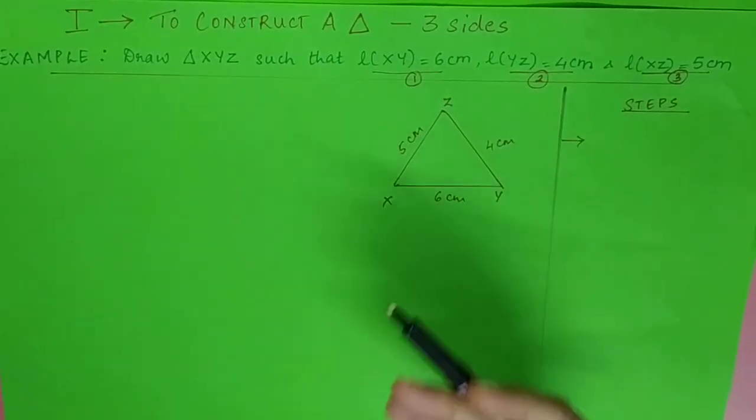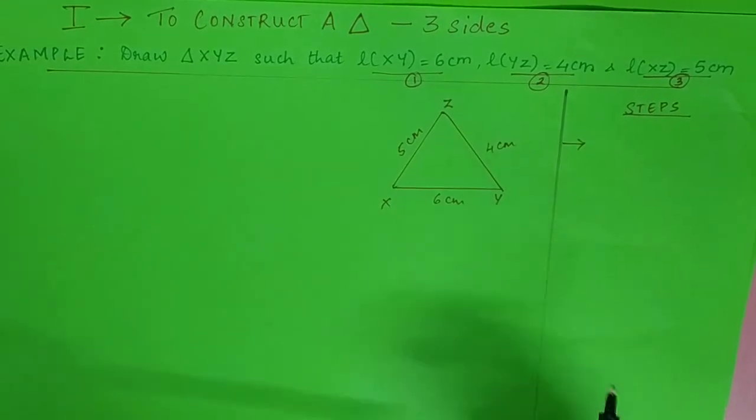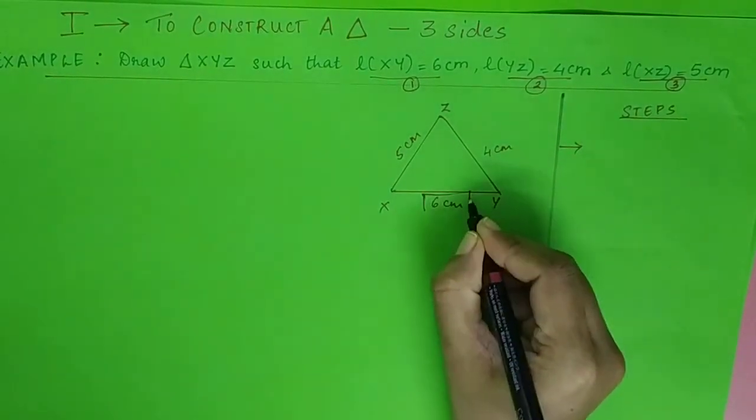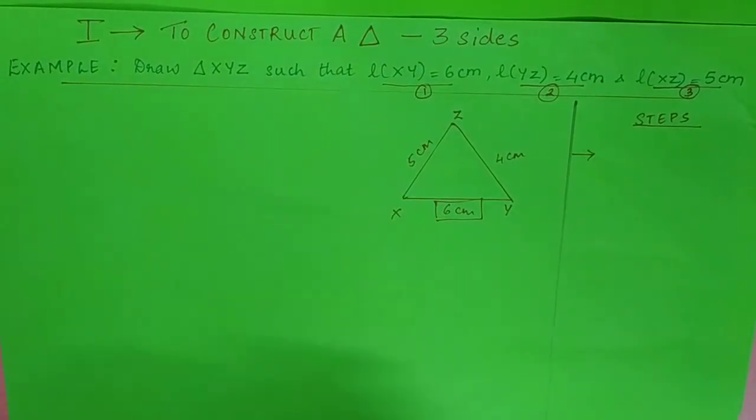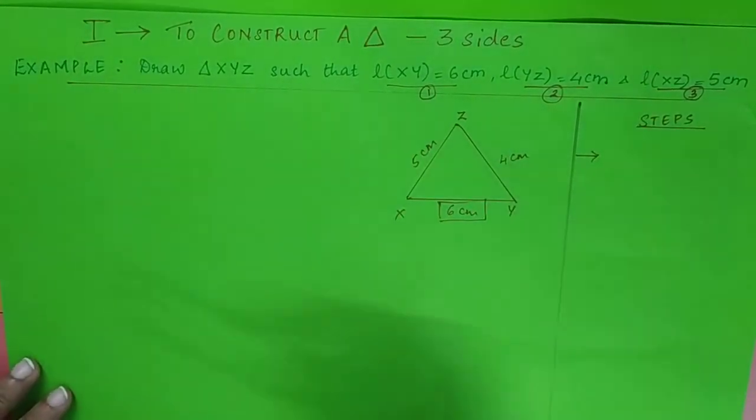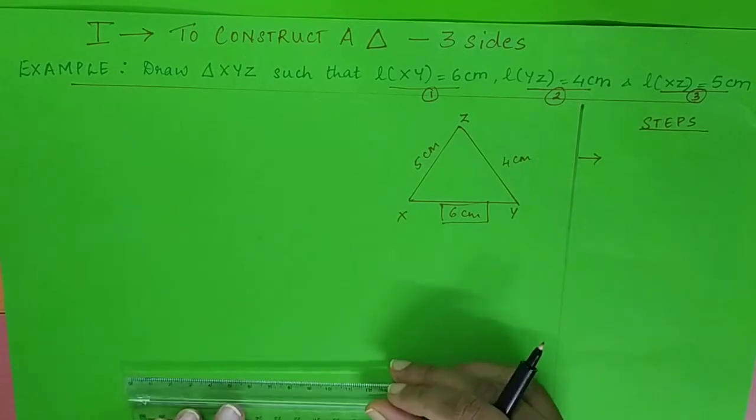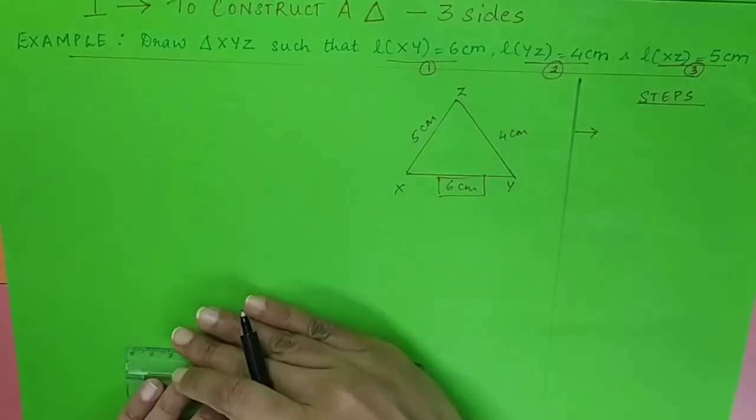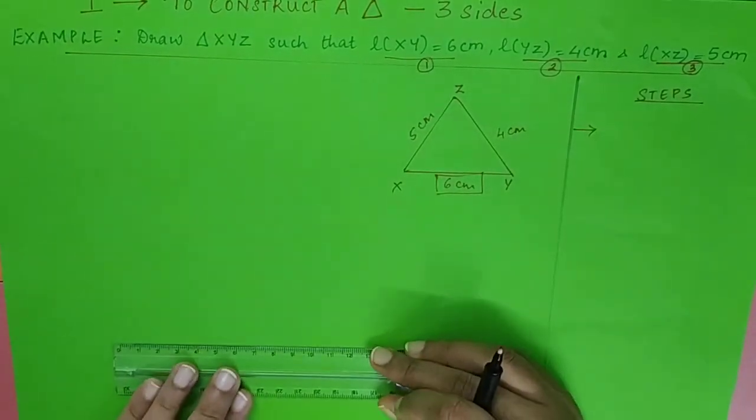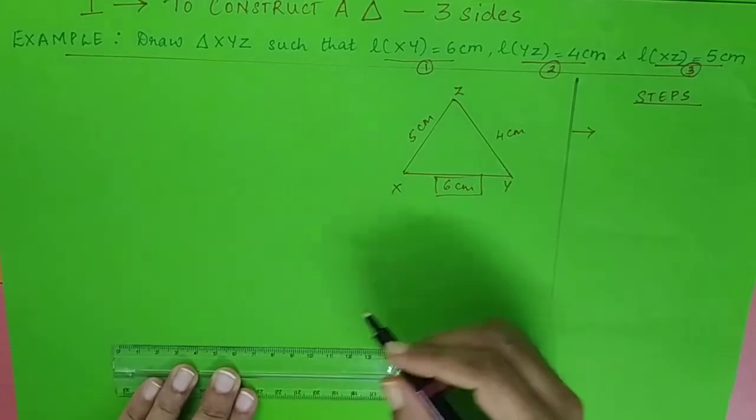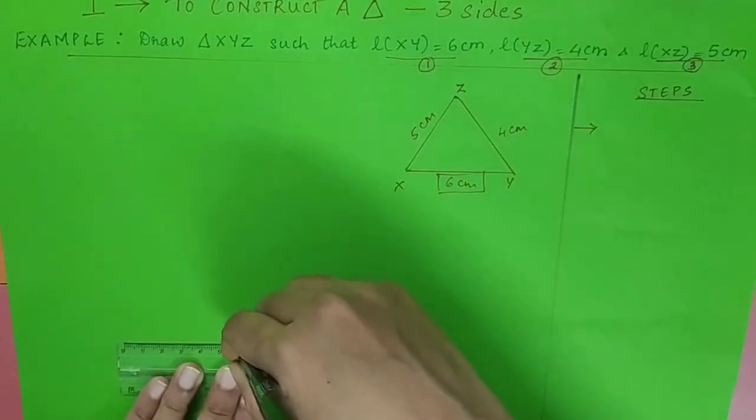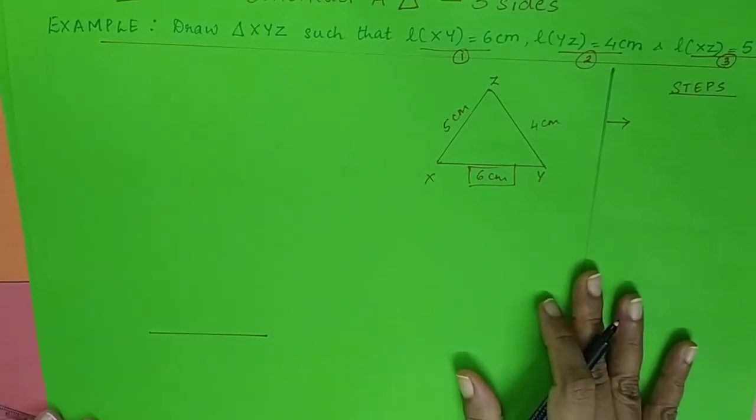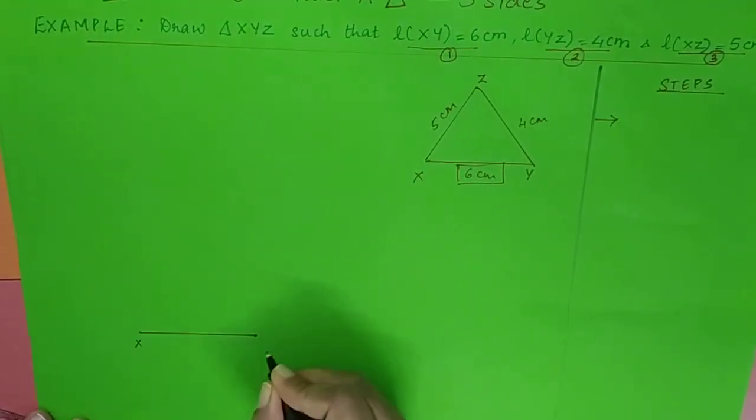Before the construction of any building, we begin with the ground floor. So similarly, I begin with the base of the triangle. You draw the base, that's XY, 6 centimeters. You place your scale, leave a lot of space for your rough diagram - say around 5 to 6 lines - and you draw the base 6 centimeters. I name it as X and Y and write 6 centimeters.